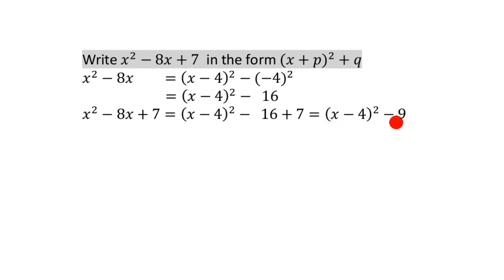So this looks like this, doesn't it? So completing the square for this is this. And so our p ended up being minus 4, and our q ended up being minus 9. So completing the square for x squared minus 8x plus 7, it gives you x minus 4 all squared minus 9.